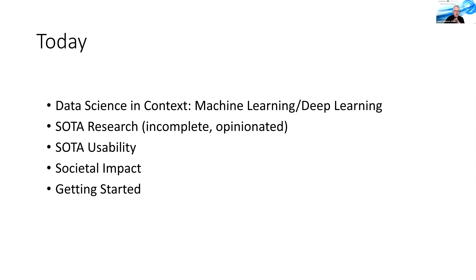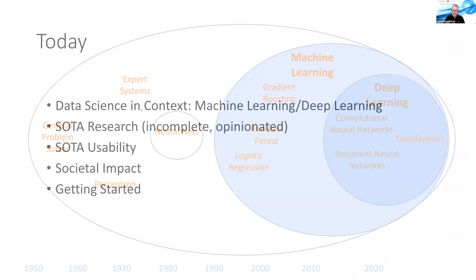Today we're going to be talking about the overview of data science. I'd like to start first by giving some context — in particular, machine learning versus deep learning. Then we're going to talk about the state of the art of research, which will be incomplete and opinionated, but these are the things I personally think are most important right now. Then we'll talk about state of the art in usability, the societal impact of some of these advances, and then I'm going to end with getting started.